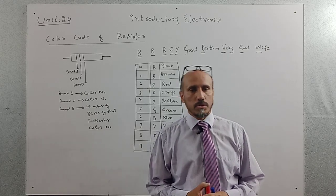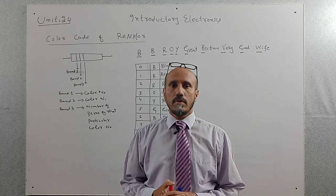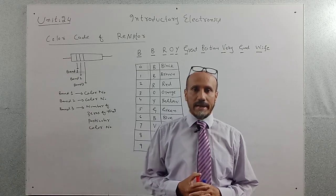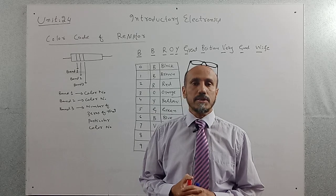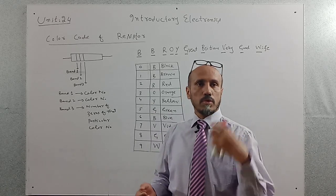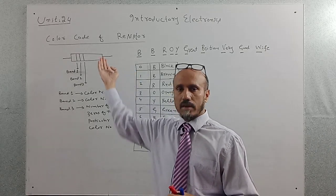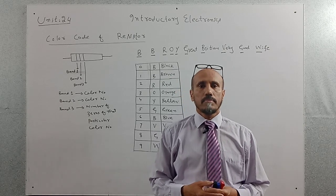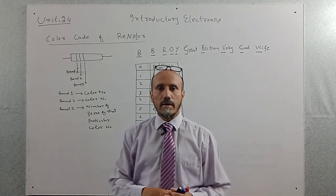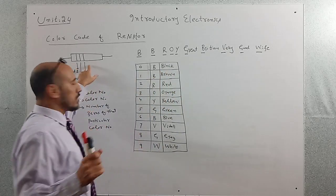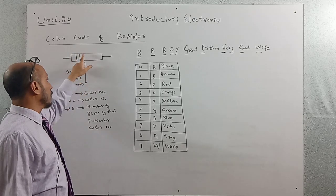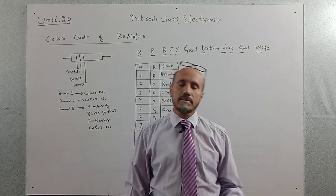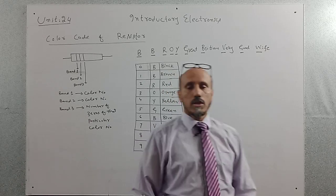When we use a resistor, we need to identify it as a particular value according to which we can select that resistor for a particular purpose. In general, there are three bands or three colors or three lines on the resistor which determine its value. Although there is a tolerance band on the rightmost side of the resistor according to this diagram, that is not part of the syllabus at all levels, so we will discuss only the method of how we can determine the value of the resistor.